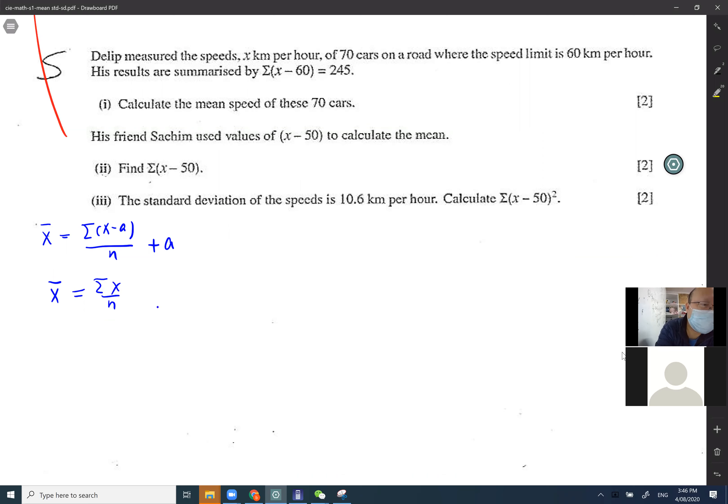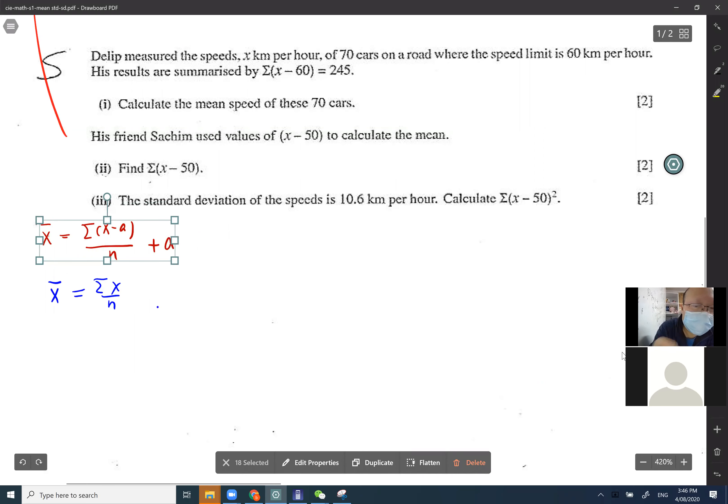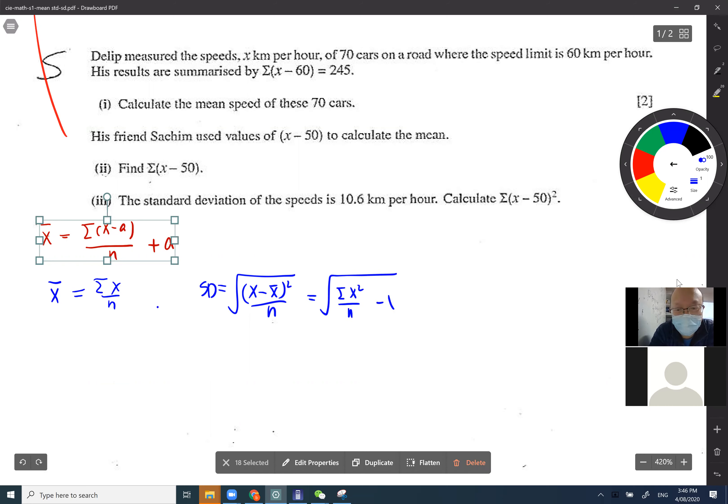You need to memorize one here, the other one is also from the formula sheet. Standard deviation equals: x minus x̄ squared over n, or sum of x squared over n minus x̄ squared. But for us, we memorize another formula. The blue one is given, the red one we need to memorize.